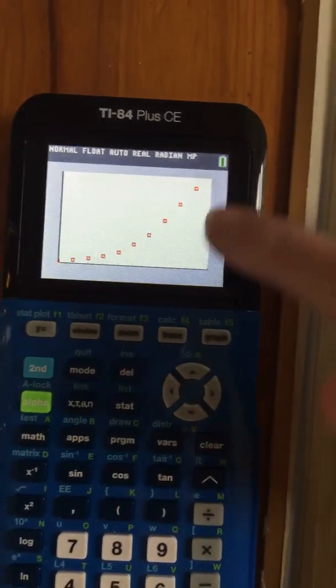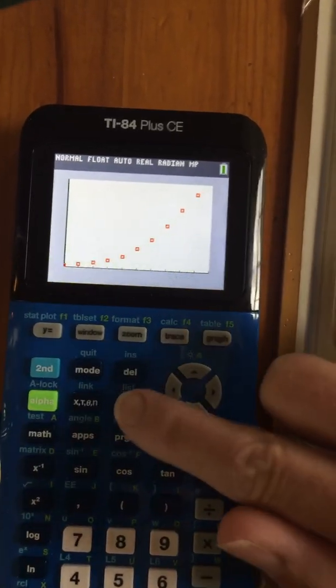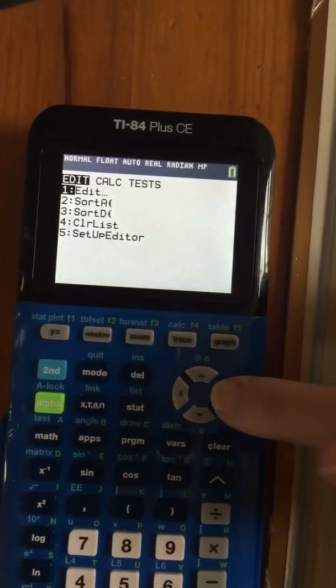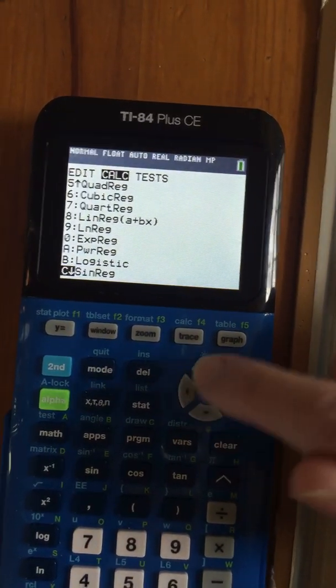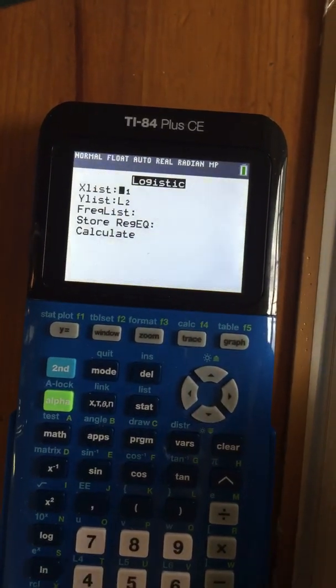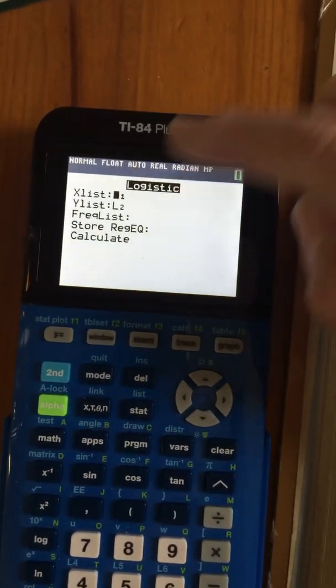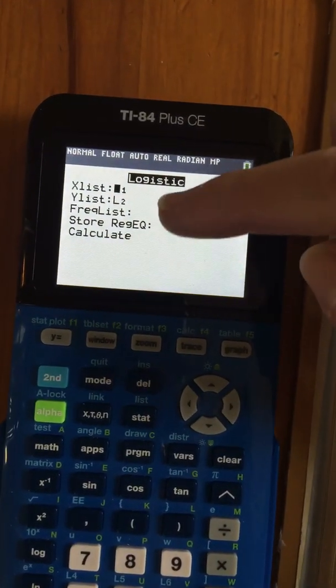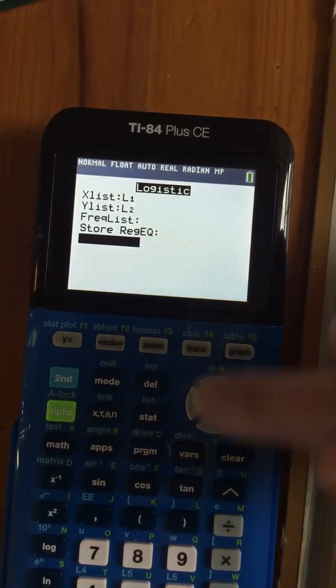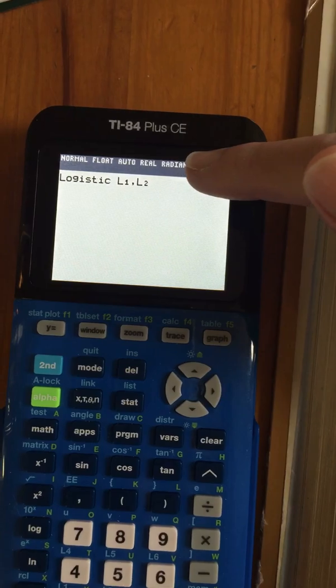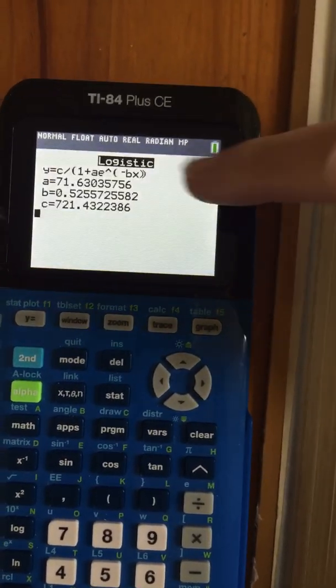Now, I want the equation for this line. So I go back to stat. I go over to calc, and I go down to logistics. And it says, do we want to calculate this formula using list 1 and list 2? Yes, we do. And so I tell it to calculate. It's thinking about it, and there it is.